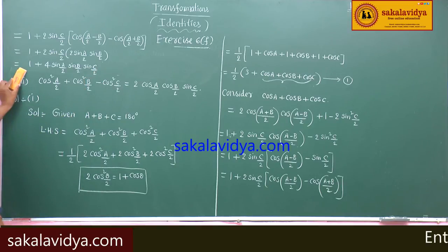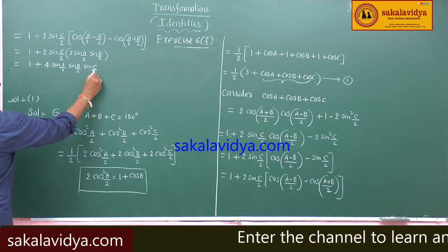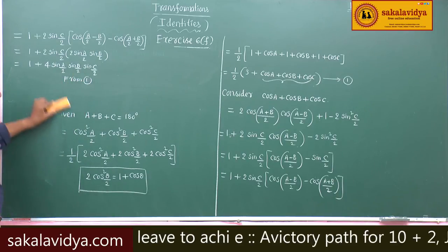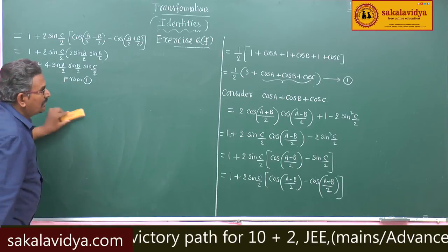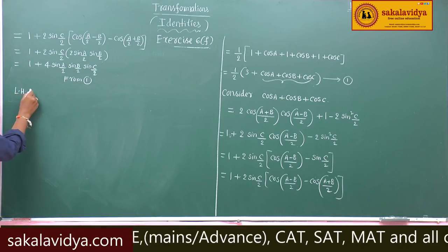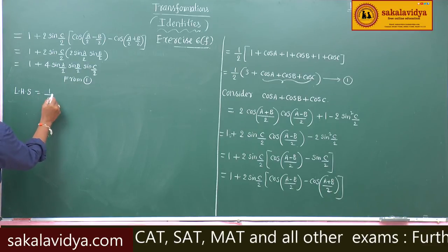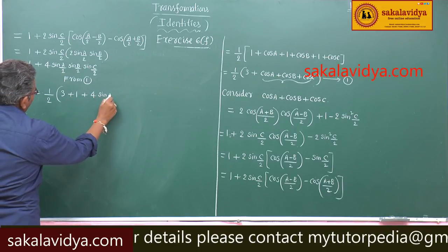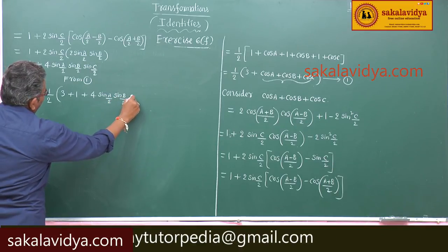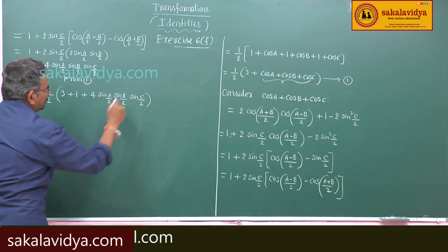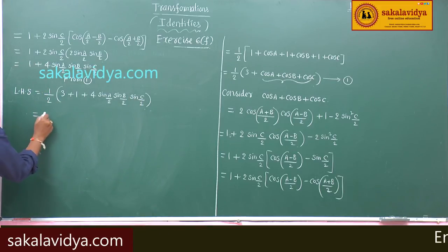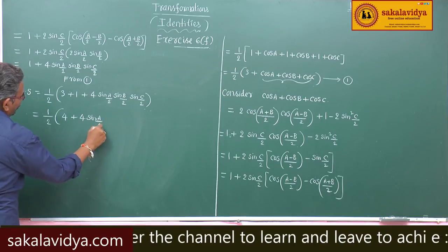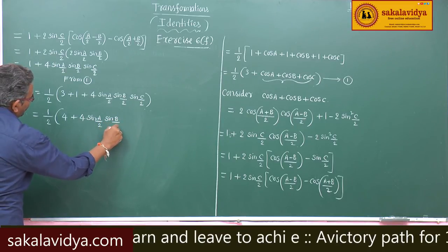Substituting back into equation 1, the left hand side becomes 1 by 2 into 3 plus 1 plus 4 sin a by 2 sin b by 2 sin c by 2, which equals 2 into 1 plus sin a by 2 sin b by 2 sin c by 2, proving the first identity.